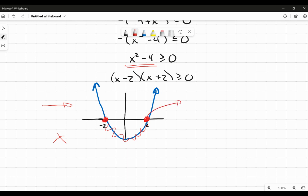Now, if I choose any value for x greater than 2, the result is going to be greater than 0. If I choose any value of x less than negative 2, the result is going to be greater than 0.